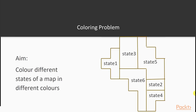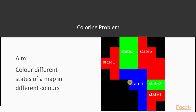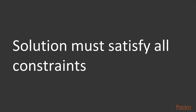In our application of the coloring problem, the aim is to color different states of a map in different colors. For example, let's assume a map with 6 different states. We can color these states such that the constraint is that two neighboring states can't be of the same color. Bear in mind, a solution must satisfy all the constraints.